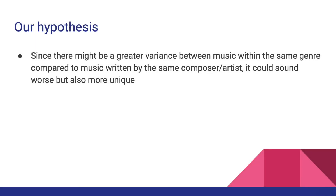We think it would be interesting to see how well a generative network does with handling a potentially larger variance within the dataset, since music within the same genre can vary a lot more compared to music by the same composer or artist. Because of the variance, we expect that the result could potentially sound worse, especially compared to generative models trained on a similarly sized dataset with less variance. However, it may also result in music that is considerably more unique.